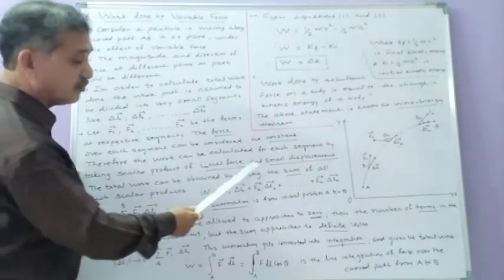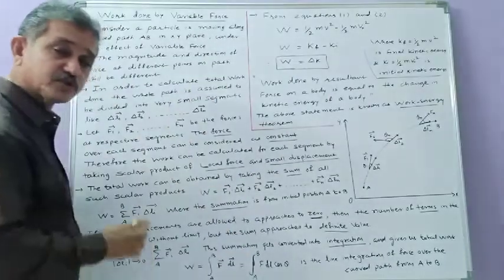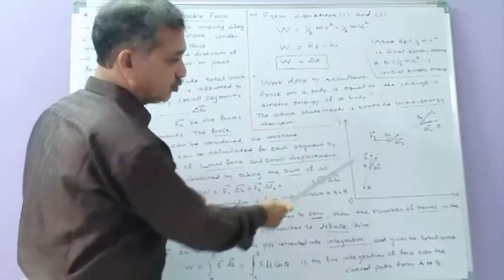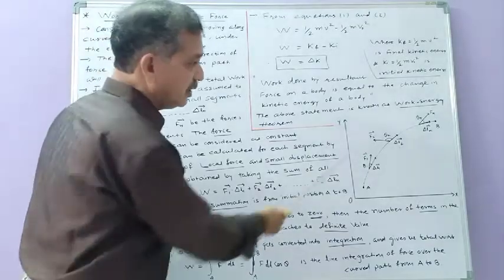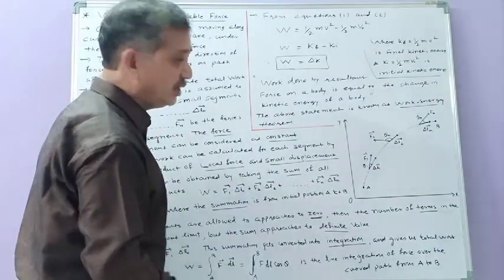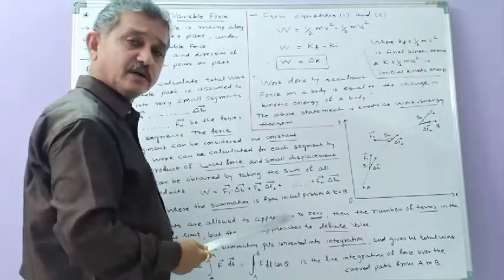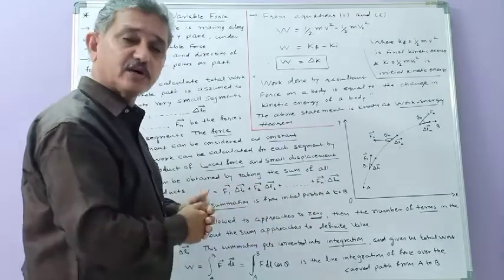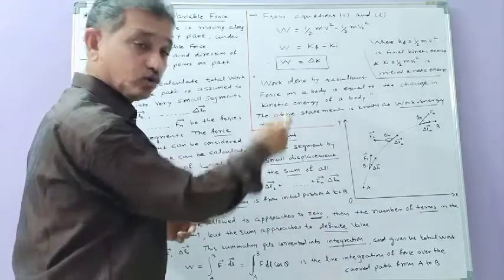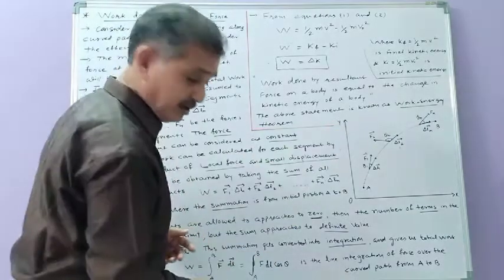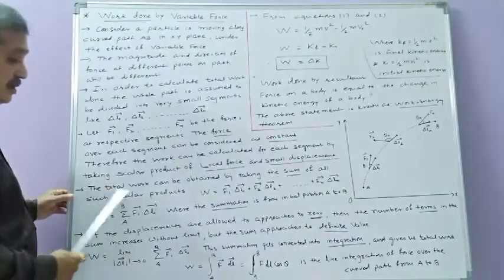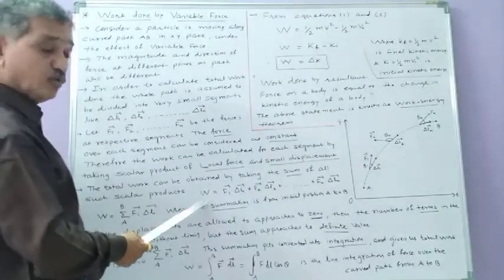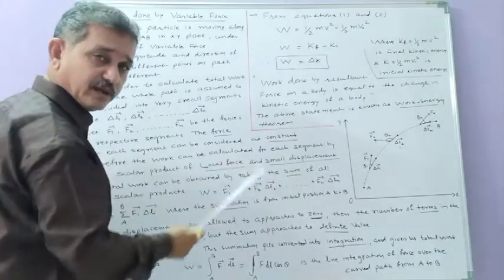By taking the scalar product of the local force and small displacement — which is the constant force formula — we get: ΔW1 = F⃗1 · ΔL⃗1, ΔW2 = F⃗2 · ΔL⃗2, ΔW3 = F⃗3 · ΔL⃗3. Taking the sum of all these works (since work is a scalar quantity), the total work done from initial point A to ending point B is W = W1 + W2 + W3 + ... + Wn.